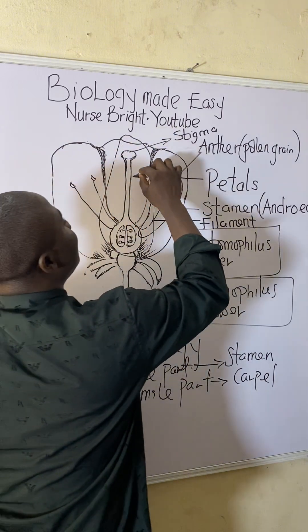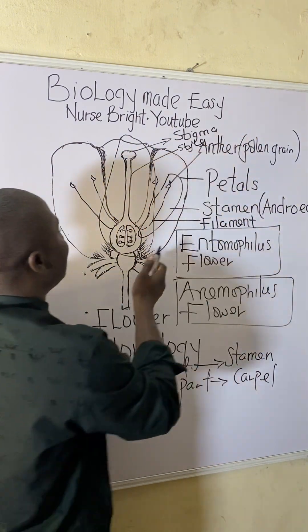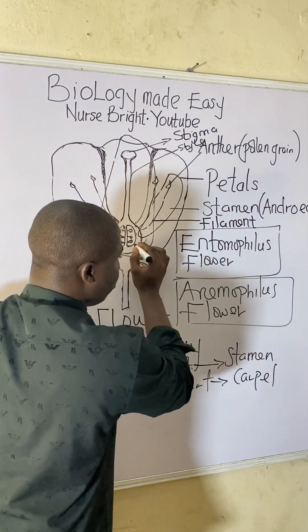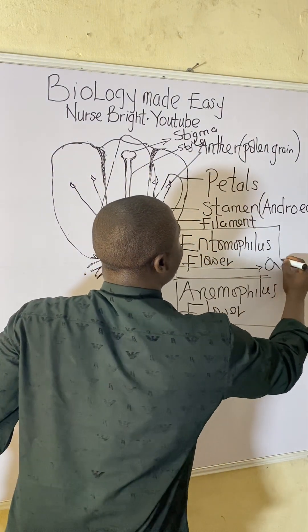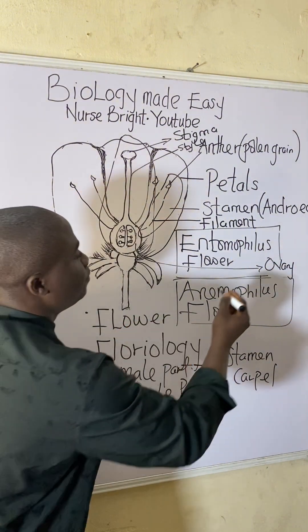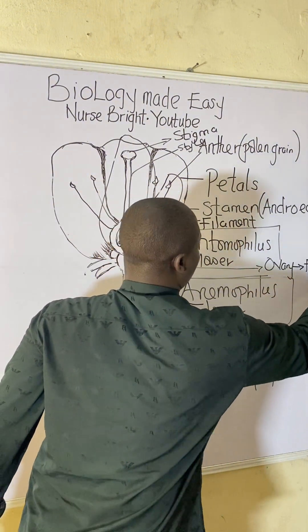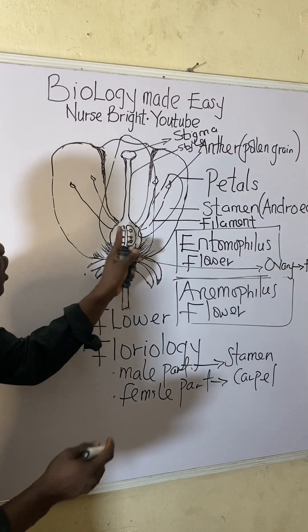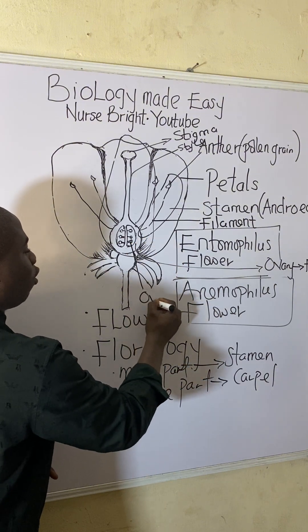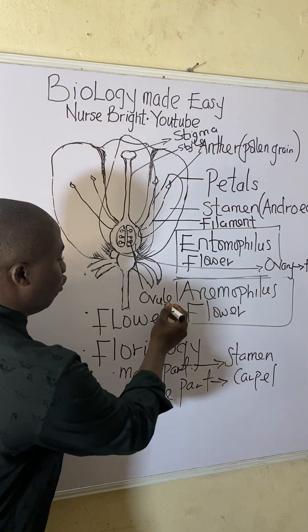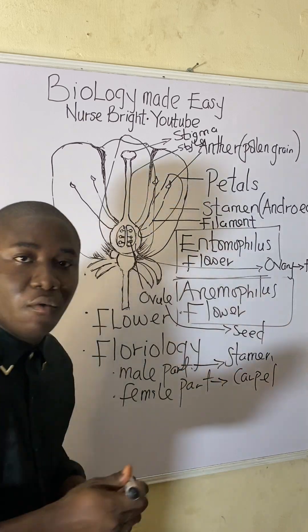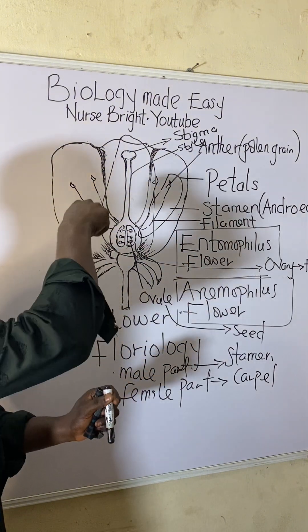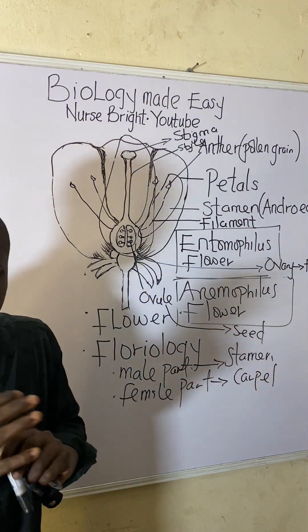Another structure in the carpel is called the style, and this round structure is called the ovary. During reproduction, the ovary develops into fruit. Inside the ovary we have structures called ovules. The ovules develop into seeds of that flower, while the ovary develops into the fruit.